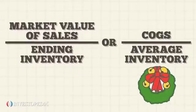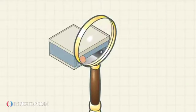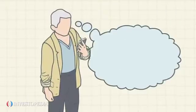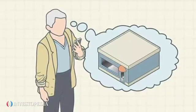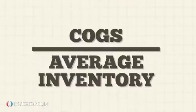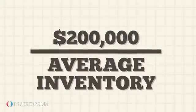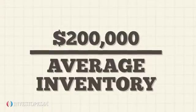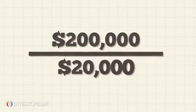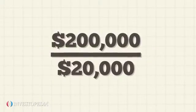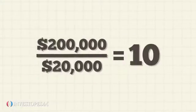Inventory turnover is useful in analyzing retail businesses. Max wants to invest in a department store. He gets StoreNIC's COGS of $200,000 from its income statement and its annual average inventory figure of $20,000 from its balance sheet, to get an inventory turnover of 10.